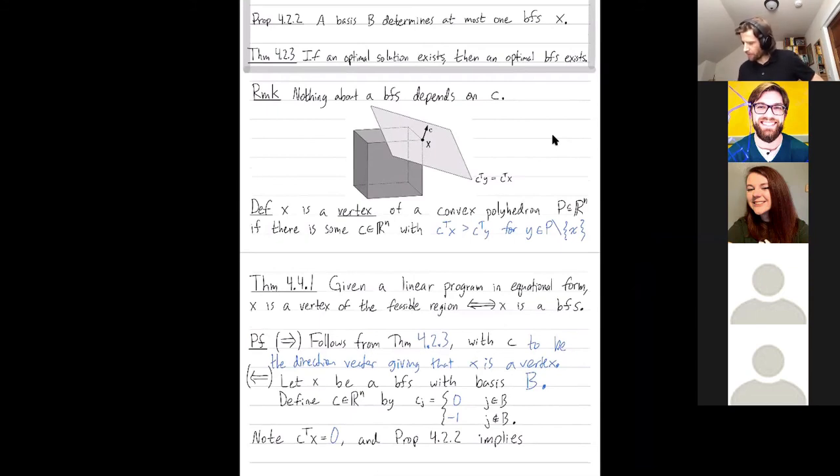And now we're going to use proposition 4.2.2. So proposition 4.2.2 is going to imply that C transpose Y is strictly less than 0 for all feasible Y that are not equal to X. So if I have a solution Y that's non-zero in any of these entries, then when I take C transpose Y, I get something negative. And proposition 4.2.2 says you can only have one basic feasible solution corresponding to any given basis. So any other feasible solution is positive in some of these entries not on the basis. And then when I take this inner product, I therefore get something negative.